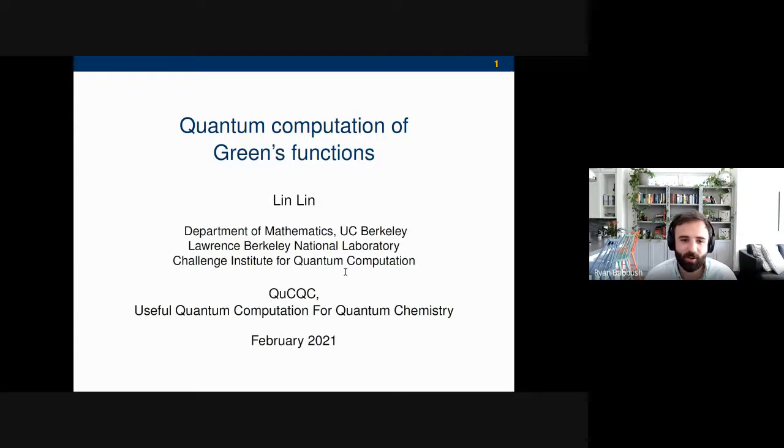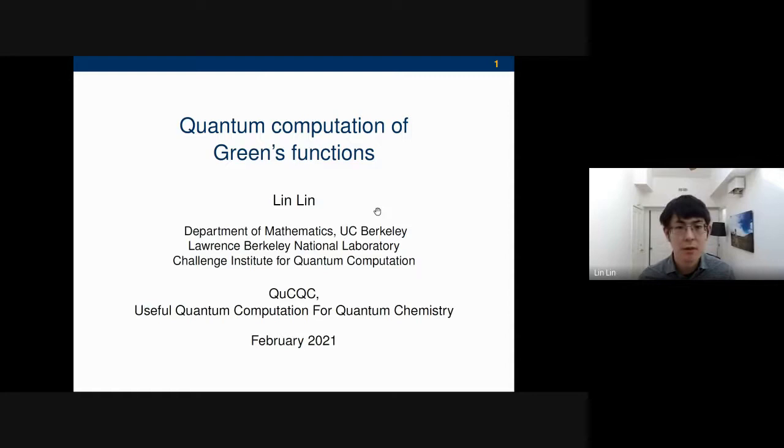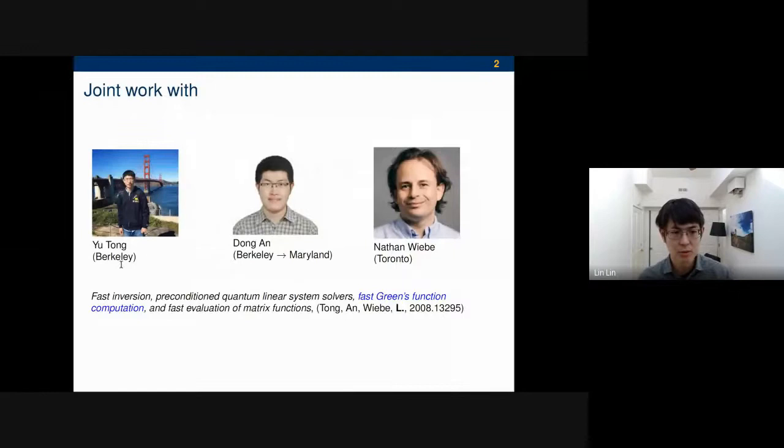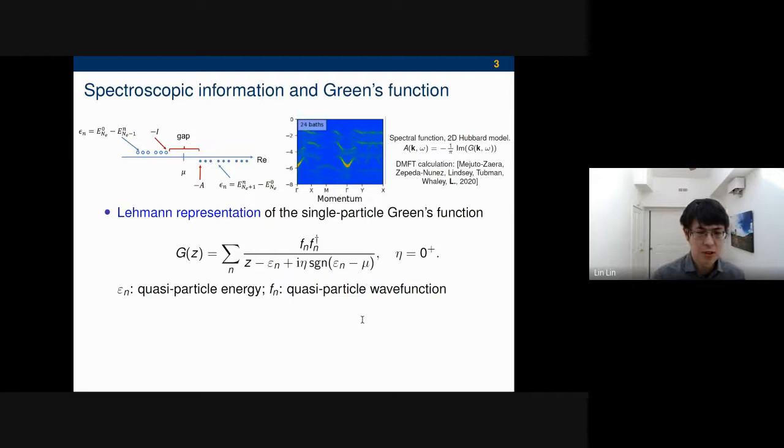Thanks, Ryan. Can you see the screen? Yes. Okay, great. Thanks for the invitation and introduction. Today I'm very glad to talk about some of our recent works on quantum computation of Green's functions. This is a joint work with two of my brilliant students, Vu Thong, who's a fourth-year grad student, and Dong Wan, who's a fifth-year student joining Maryland as a Hartree Fellow in quantum information this fall, and also Nathan Weeb. It is mainly based on this paper.